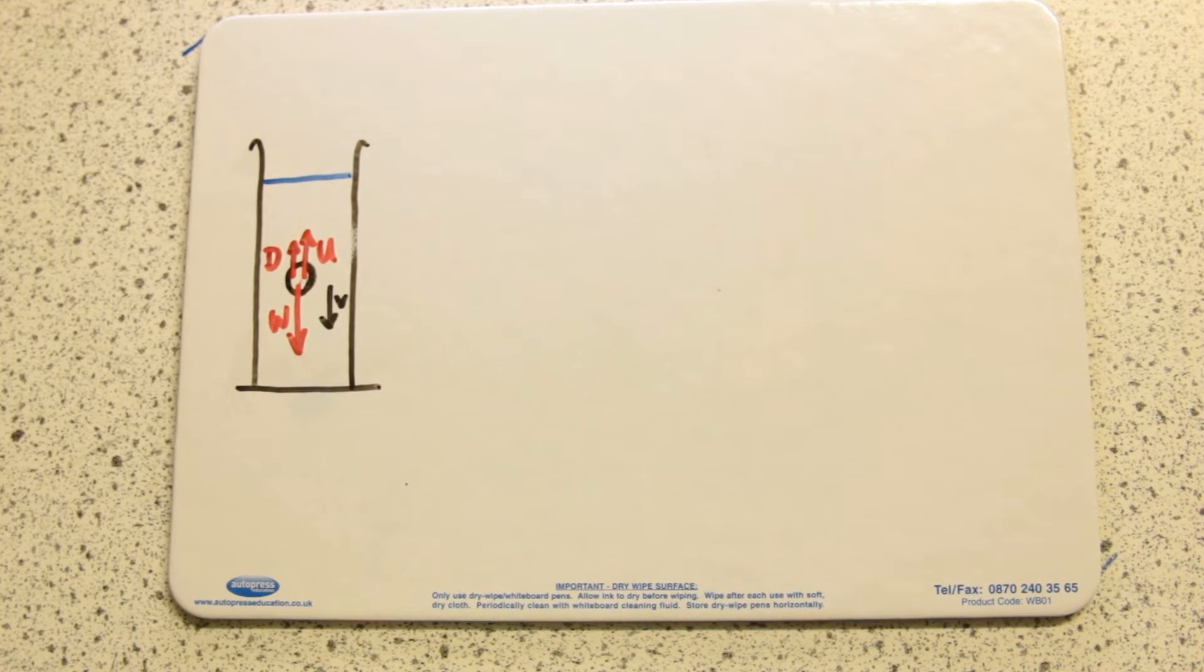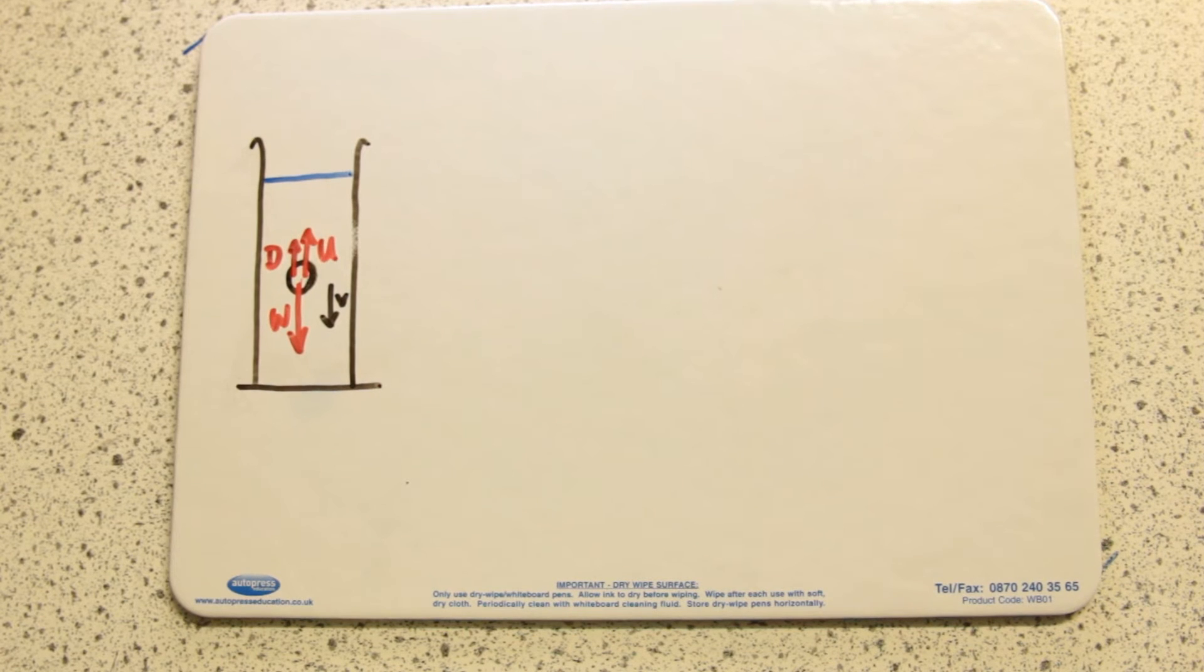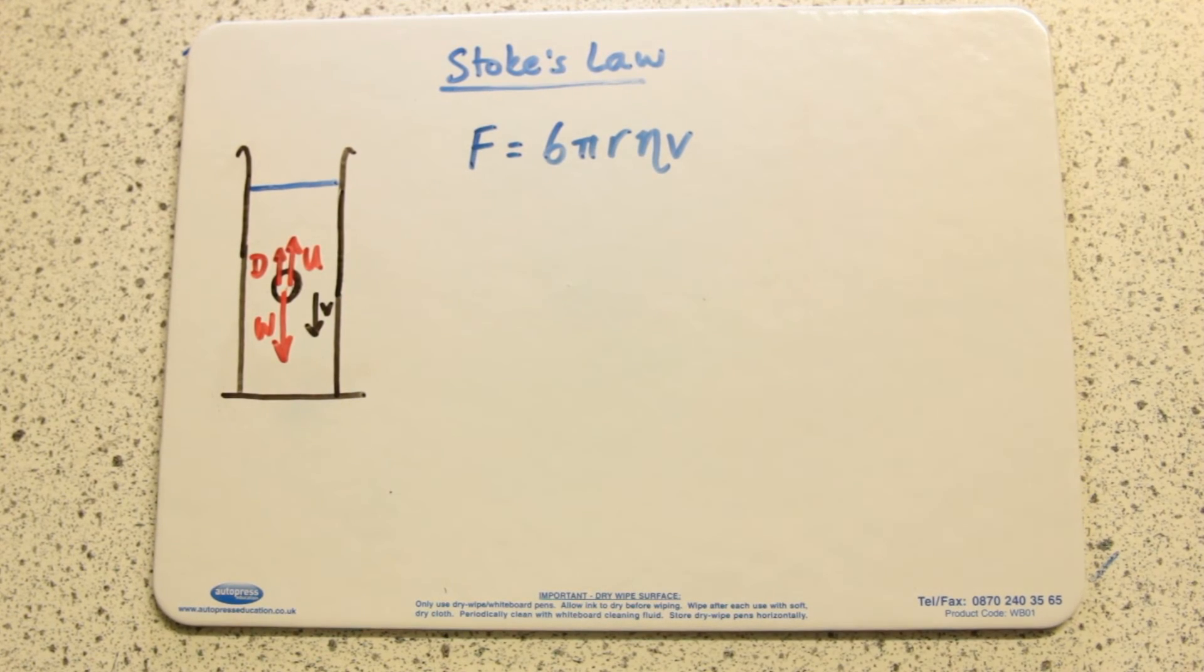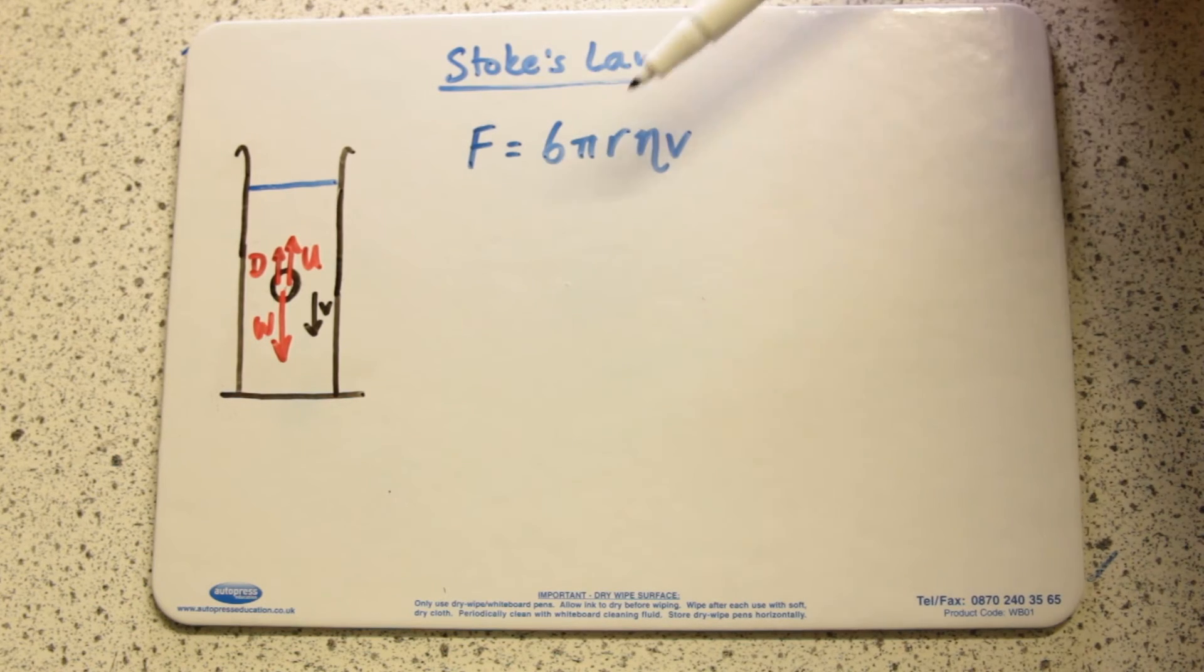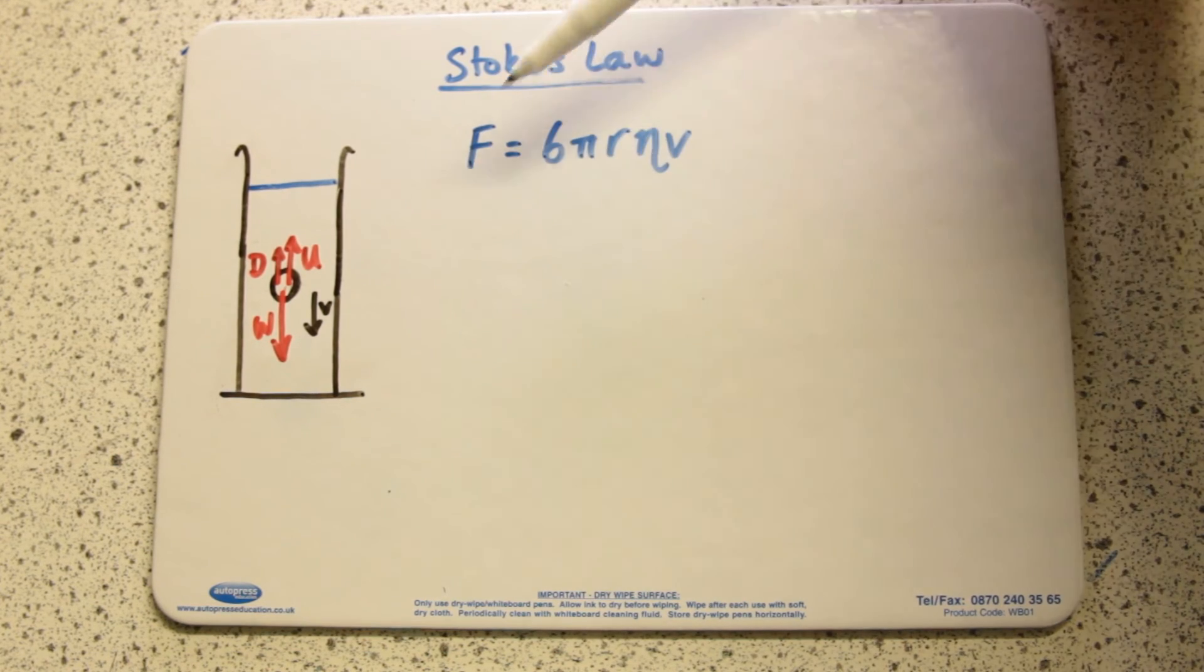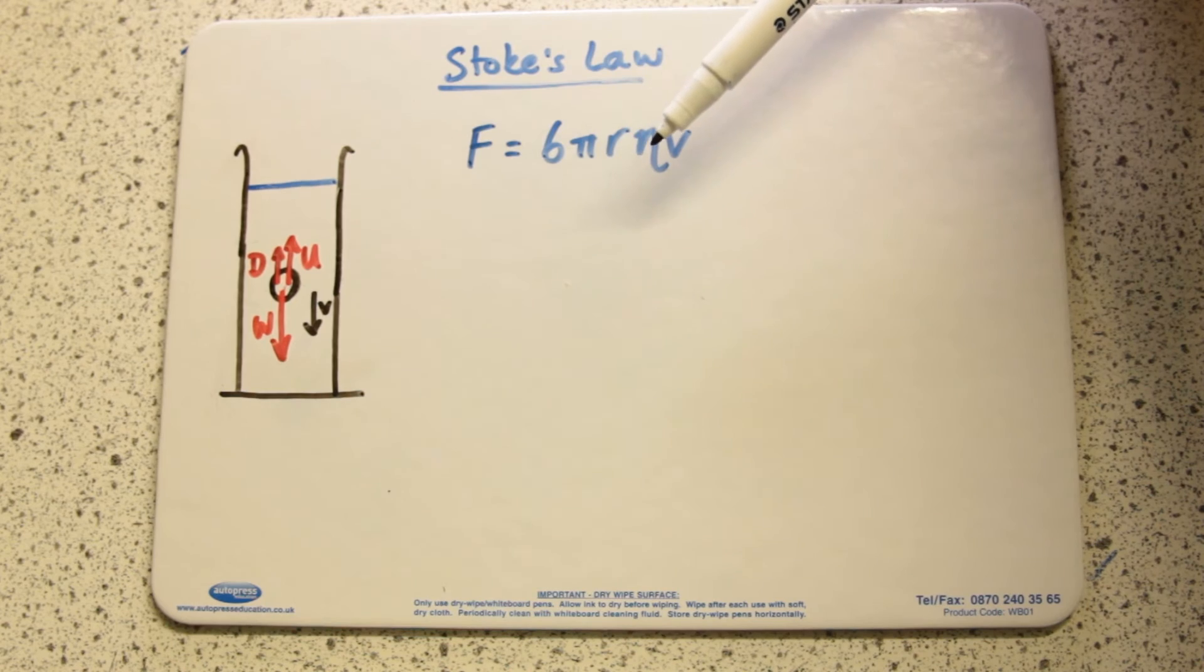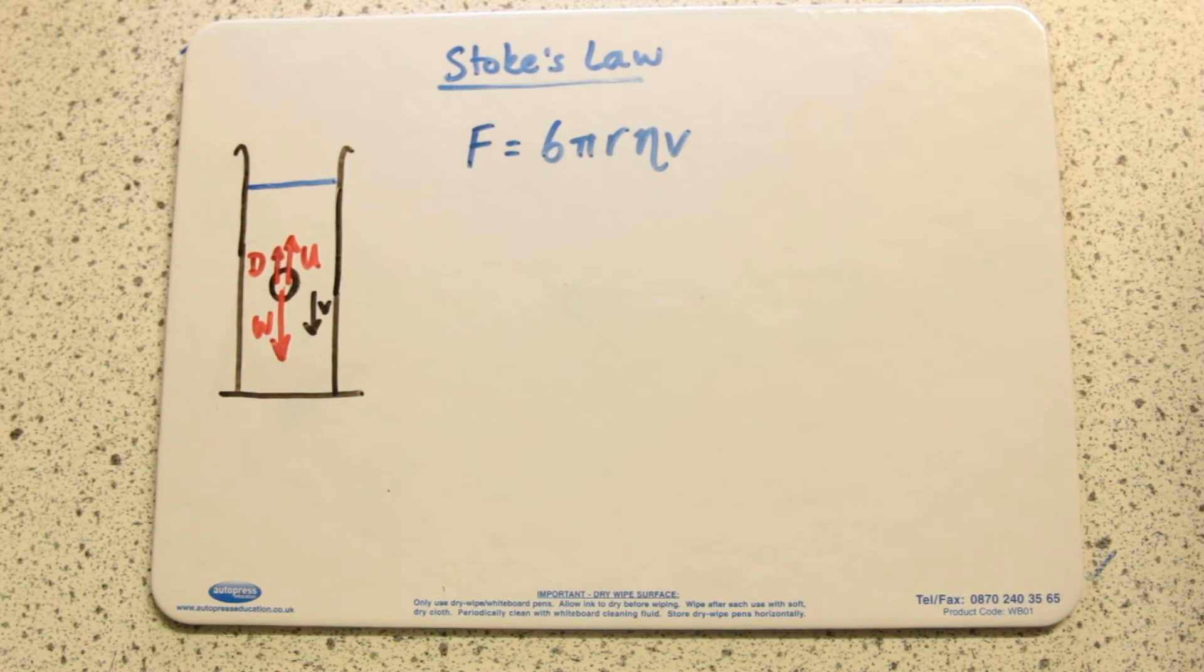There's still its weight W, there's still an upthrust which is now less than the weight, but there is also this third force D which is the drag force or viscous drag. To calculate viscous drag we use Stokes' law: F = 6πrηV.